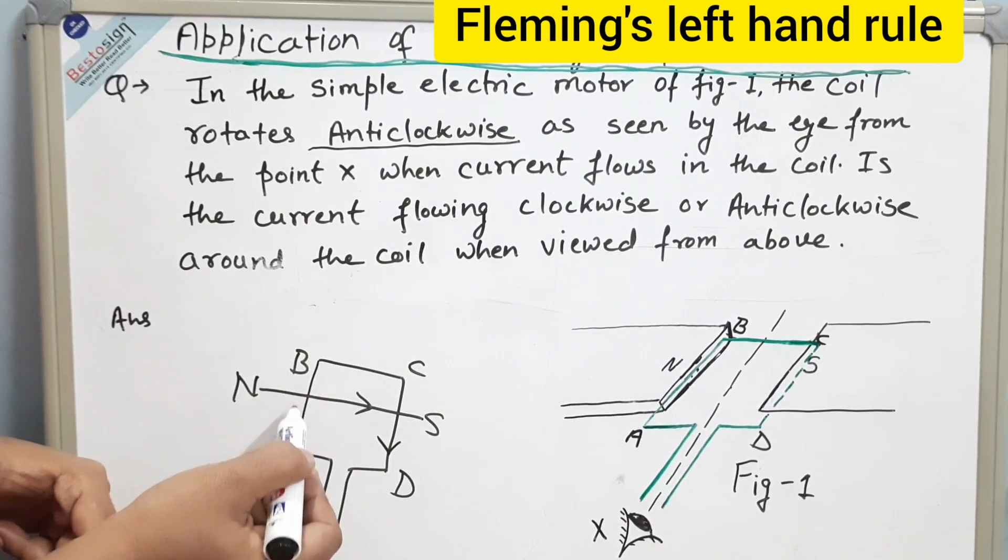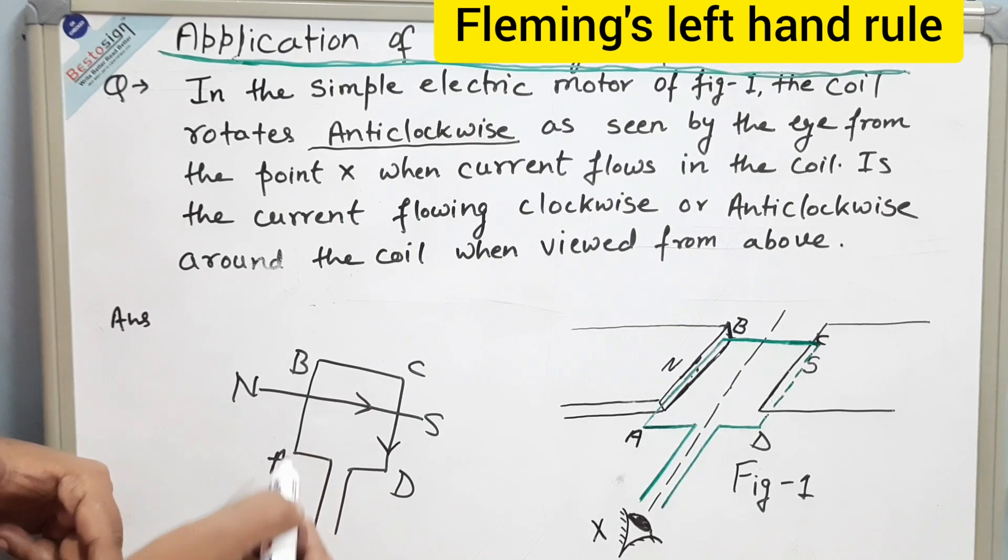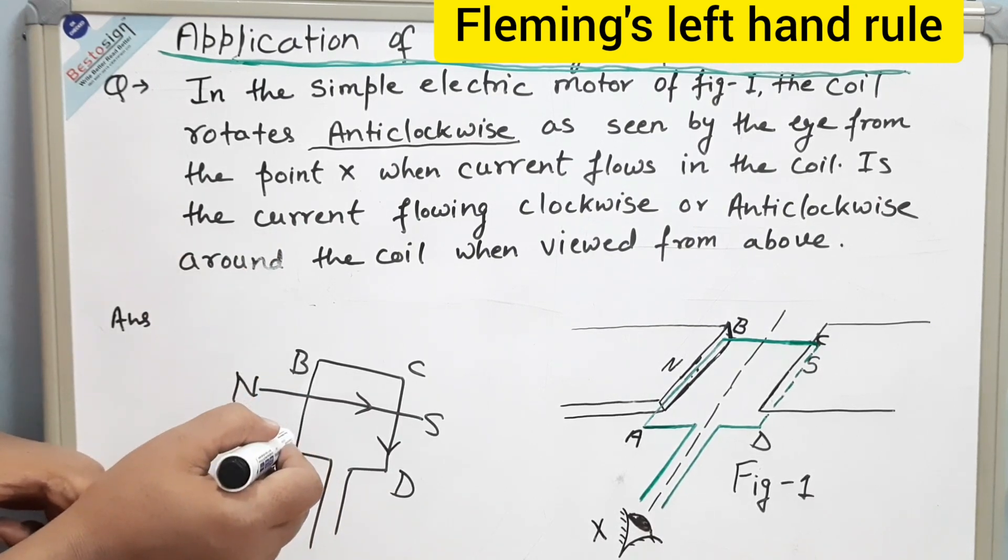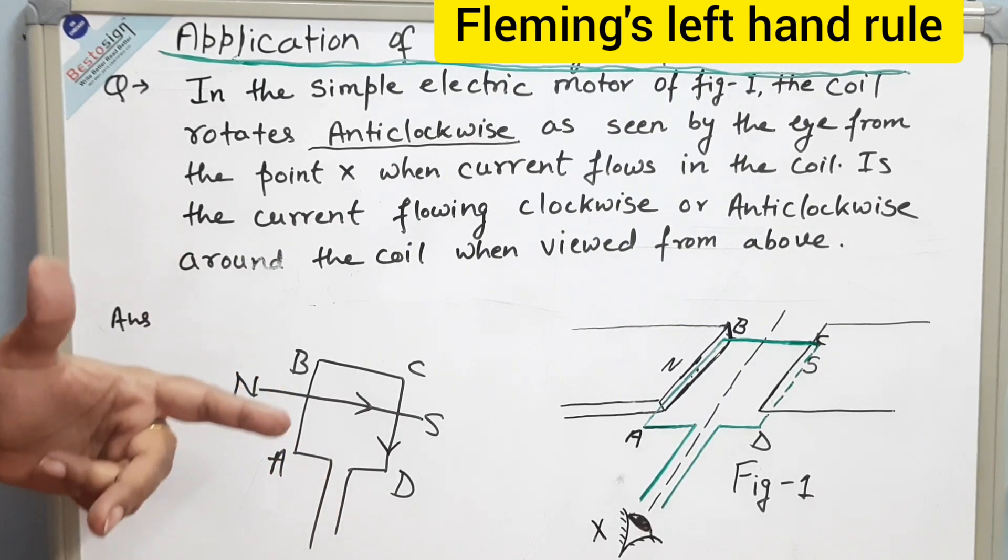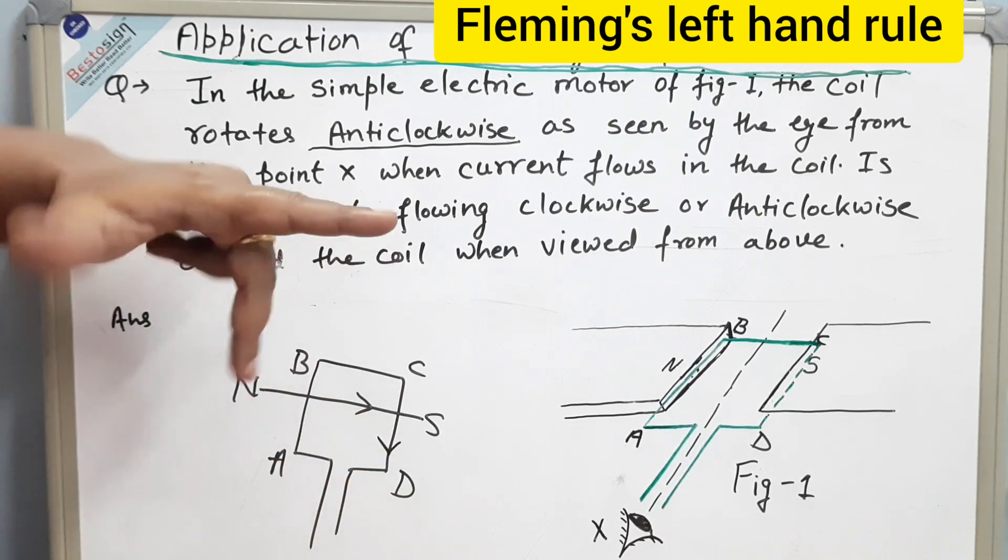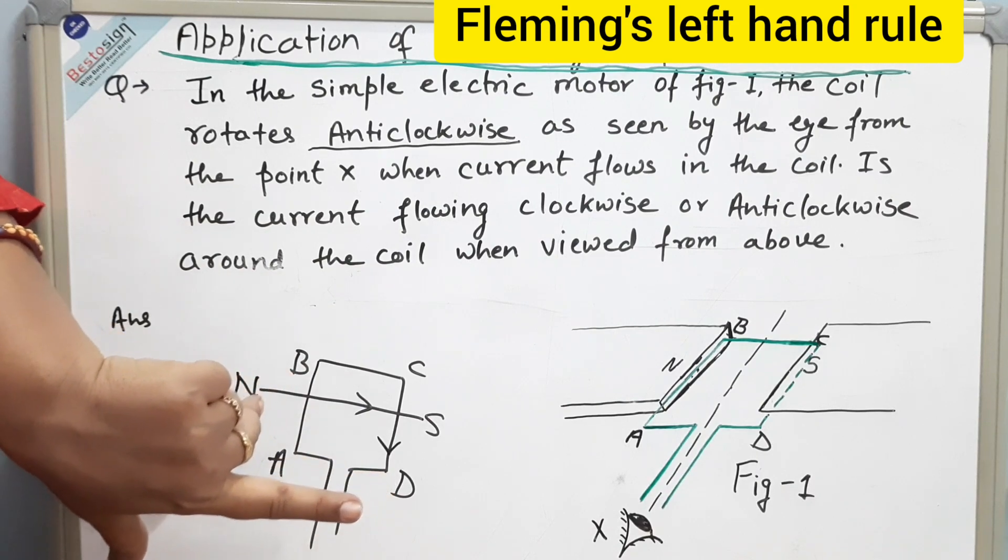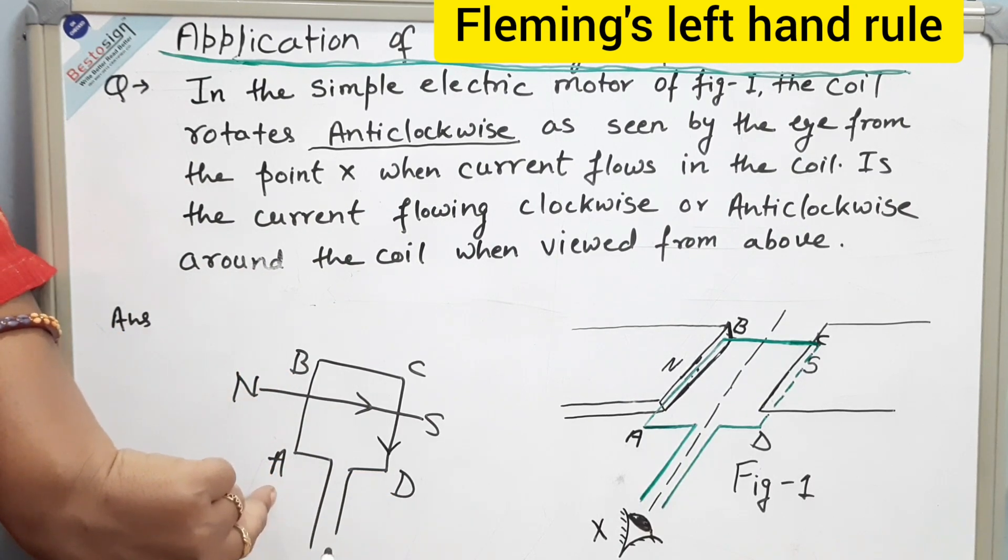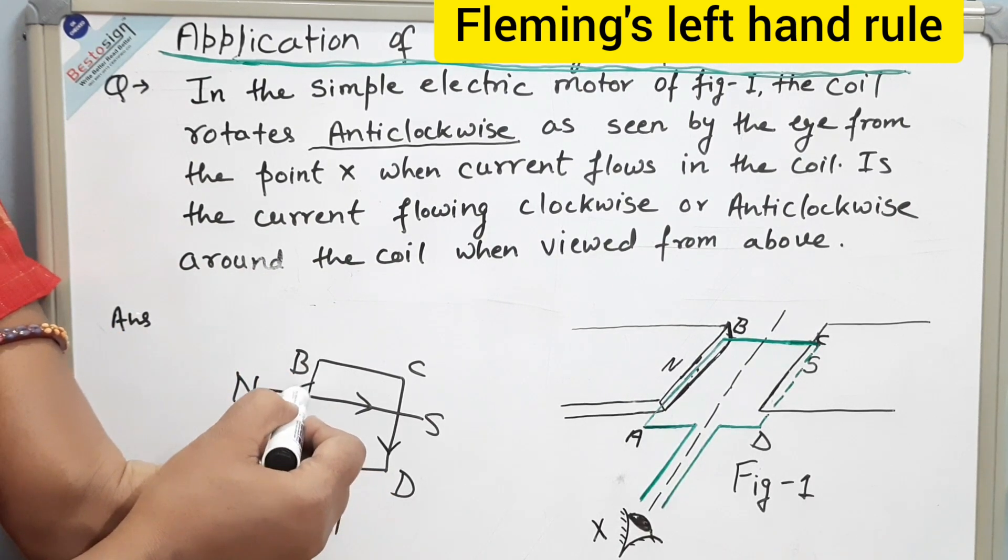Now, side ab. If the side ab has to go down, then the force on side ab should be downward. So, for the downward force, we will see that downward force like this. So, the current on the side ab should go towards b.